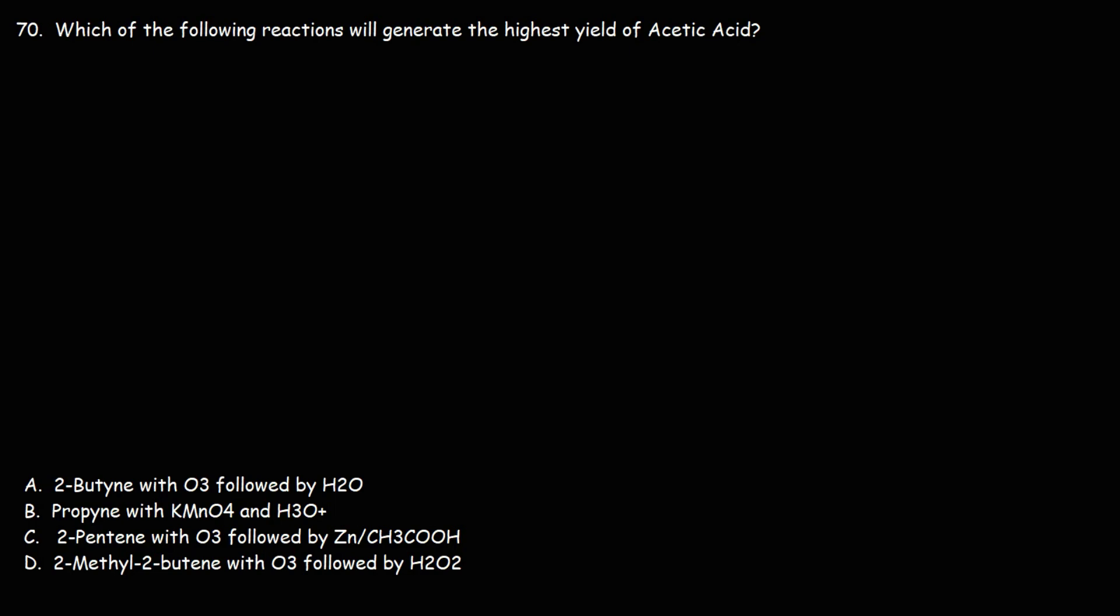Number 70: which of the following reactions will generate the highest yield of acetic acid? Let's go through each one. Let's start with answer choice D. We have 2-methyl-2-butene, so this is 2-butene counting from left to right with a methyl on carbon 2, and let's react it with ozone followed by hydrogen peroxide.